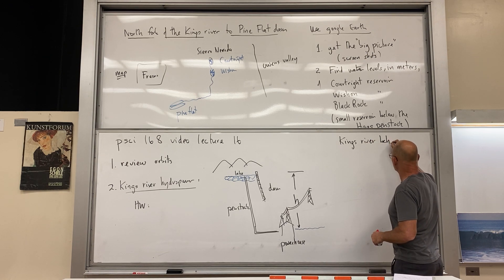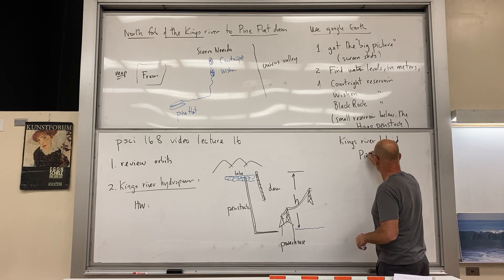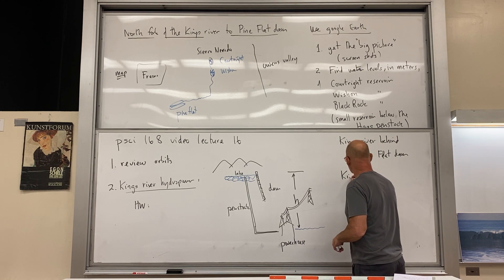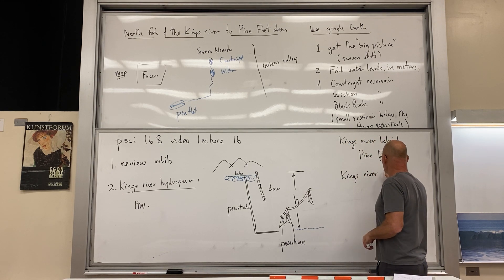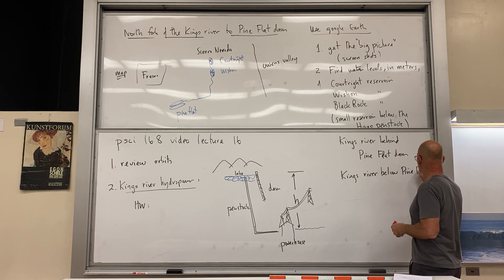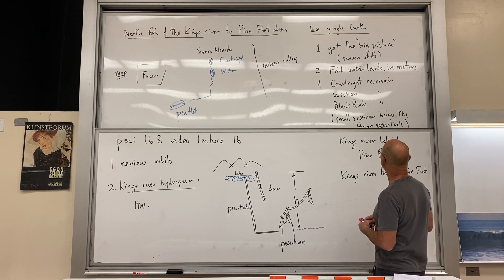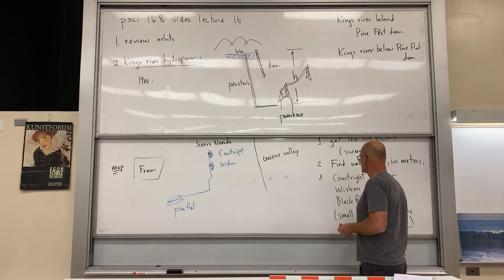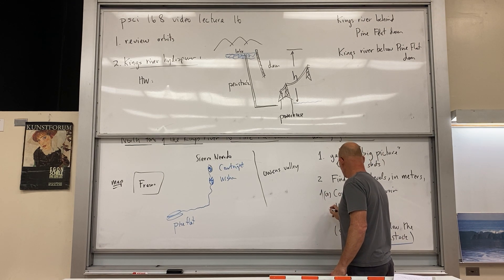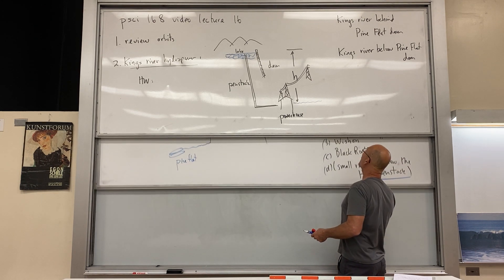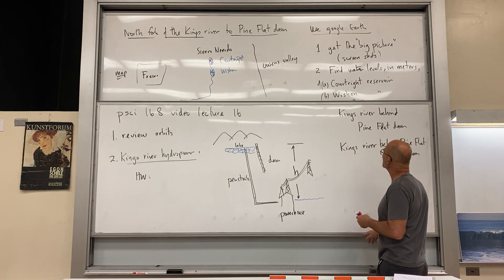Courtright, Wishon, Black Rock, and small reservoir, so those are one, two, three, four. I have Kings River behind, so upstream Pine Flat Dam, and then finally the Kings River below, that is to say downstream from Pine Flat. Yeah, yeah, you only list these. I'll list these somehow: a, b, c, d, e, and f. Good, so now they're listed.